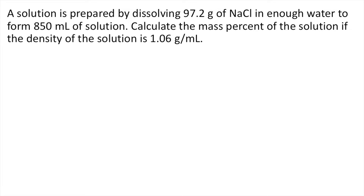A solution is prepared by dissolving 97.2 grams of NaCl in enough water to form 850 ml of solution. Calculate the mass percent of the solution if the density of the solution is 1.06 grams per ml.